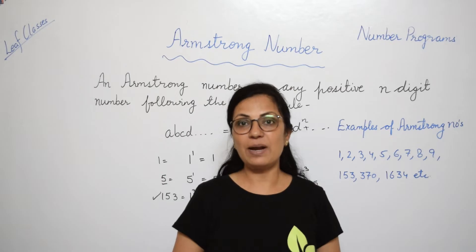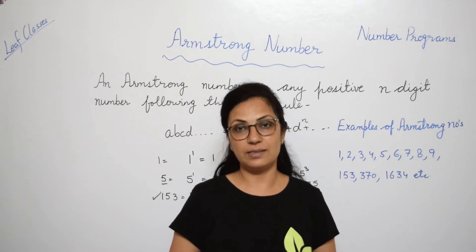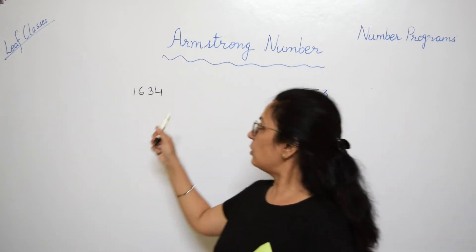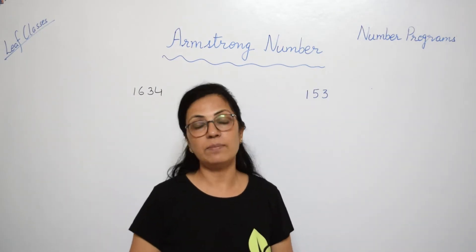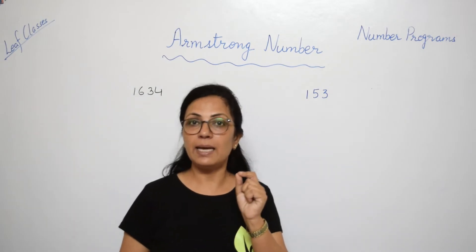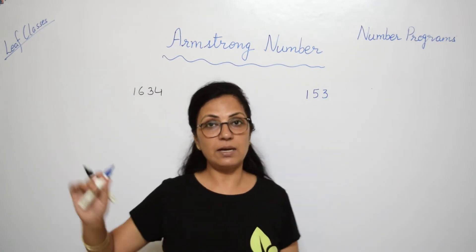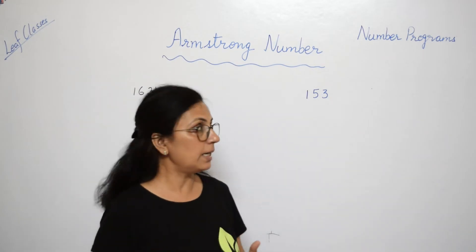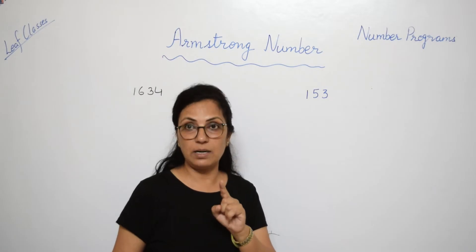Before writing the program, I would first like to explain the logic, because understanding the logic is very important. I have taken two numbers here and I will be telling you how to proceed to check whether these numbers are Armstrong numbers or not. One has three digits and the other has four digits.